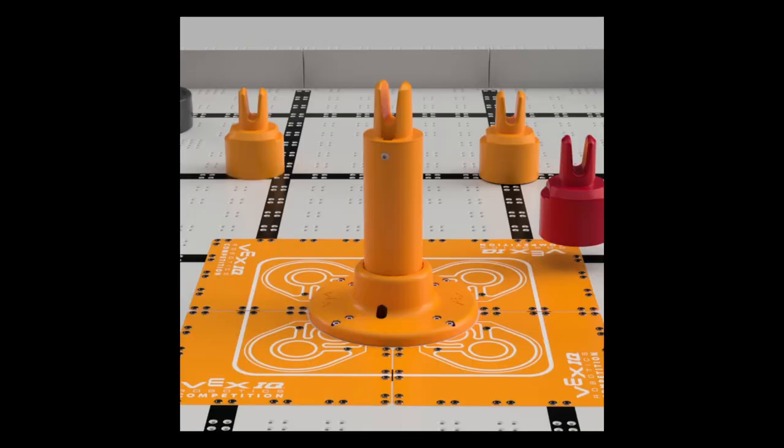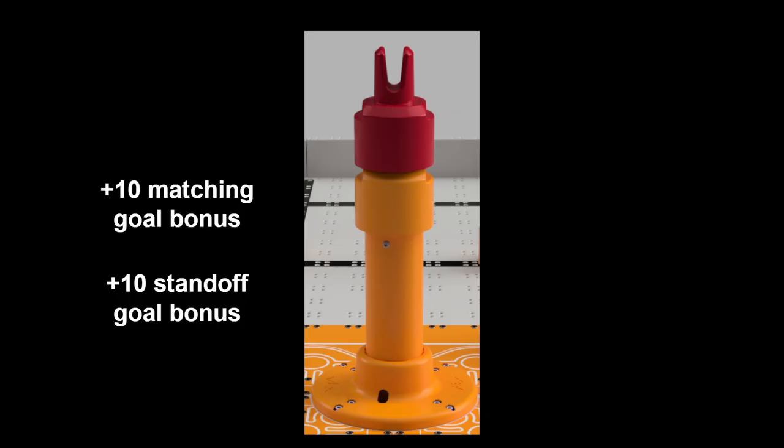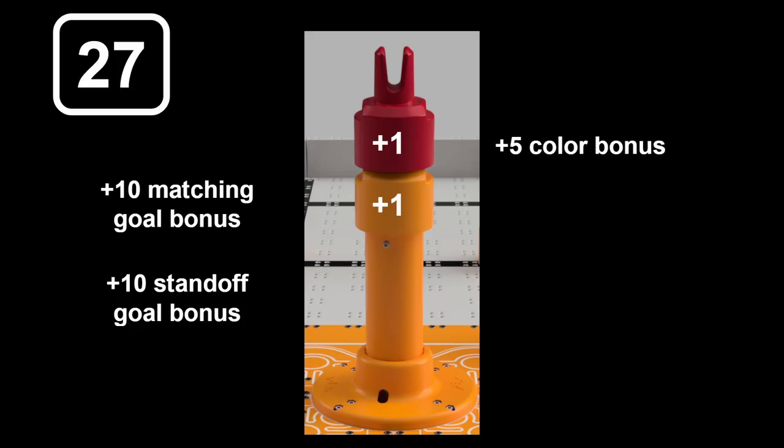The last and maybe most interesting goal is the standoff goal. Any stacks placed on this goal earn an extra ten points. But since it's also a normal goal, stacks on it also get the matching goal bonus if the bottom pin is orange. So having a stack on the standoff goal gets ten points for the standoff goal bonus. Plus, since this stack has an orange pin at the bottom, which matches the color of the standoff, it also gets the ten point matching goal bonus. Add on the five point color bonus, plus the points for the pins, gives this stack a total of 27 points for just two pins.